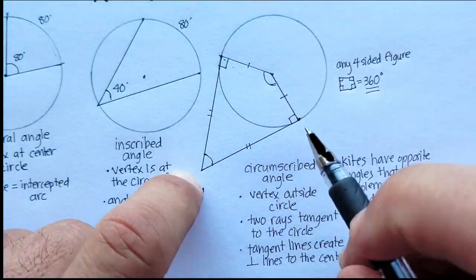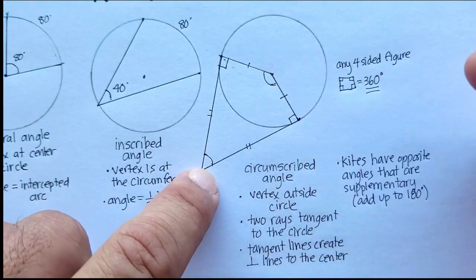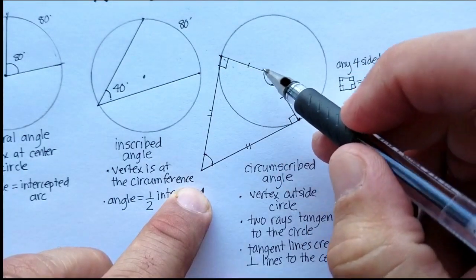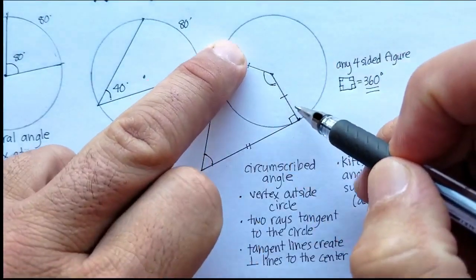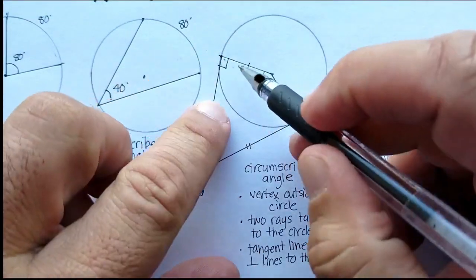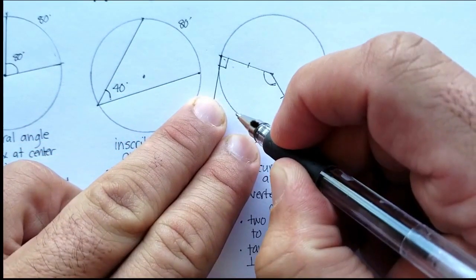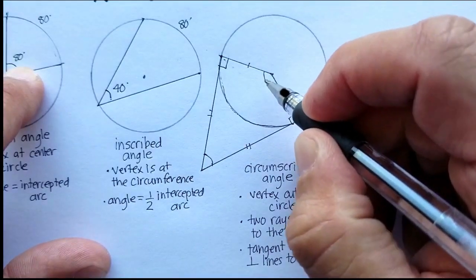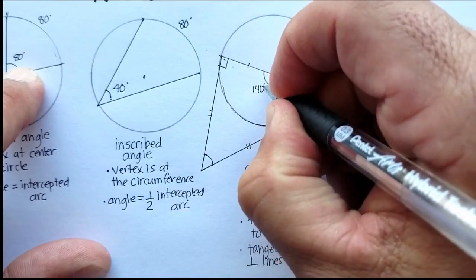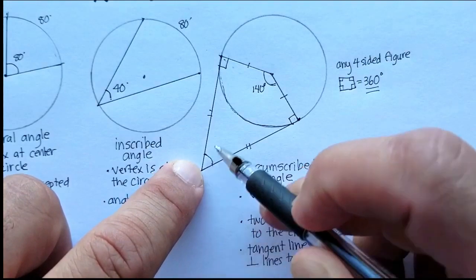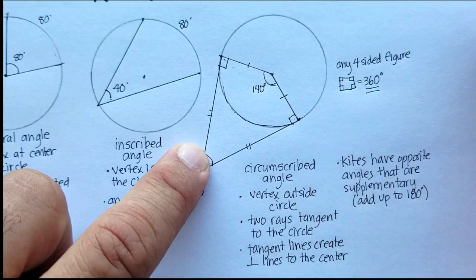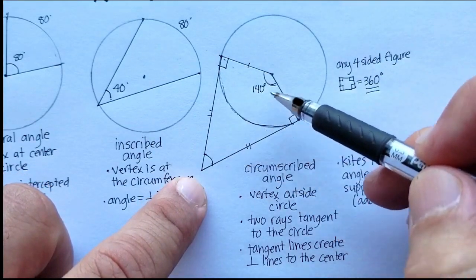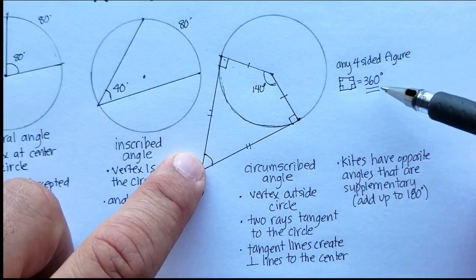In this kite, the opposite sides always equal 180 degrees. Notice that the tangent lines also create a central angle when you draw the perpendicular lines to the center. So if the central angle is 140 degrees, the circumscribed angle would be 40 degrees, because they must be supplementary and add up to 180. You could also verify this by adding all four angles to get 360 degrees.